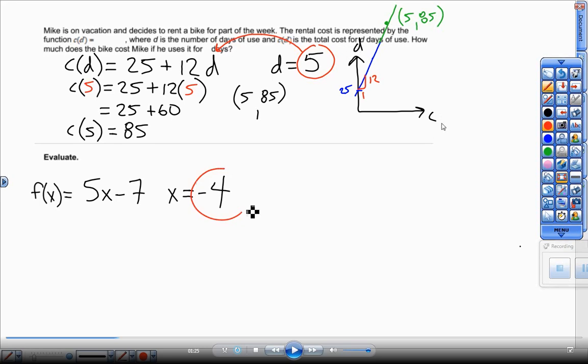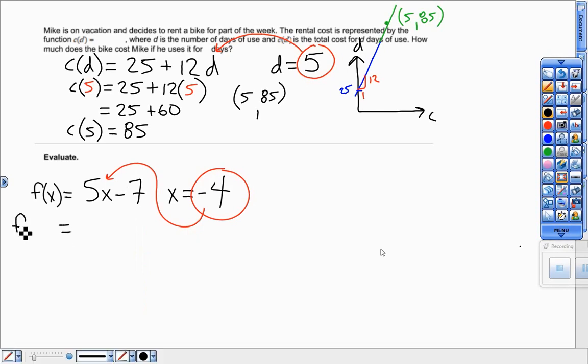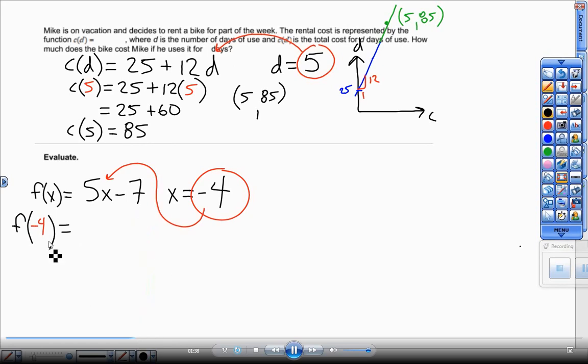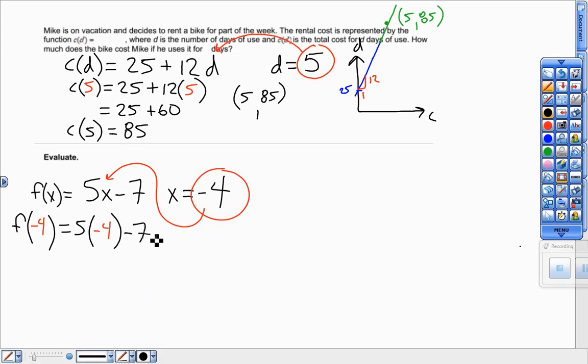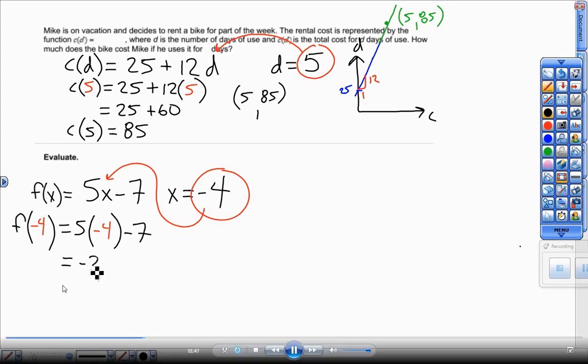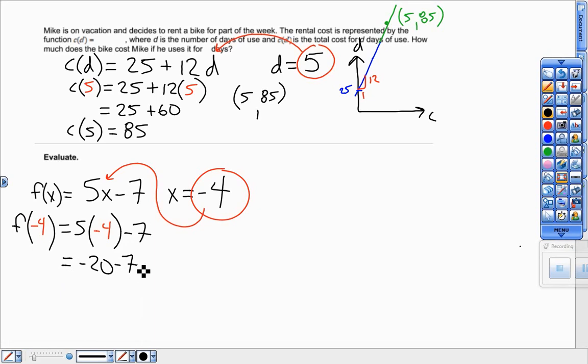This next one here, take that negative 4, plug it in for X, gives me 5 times negative 4 minus 7. This is my notation right here, evaluating the function at negative 4. 5 times that negative 4 minus 7 gives me negative 20 minus 7. So the function at negative 4 is negative 27.